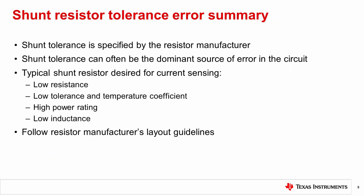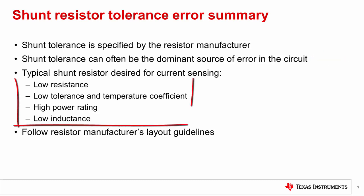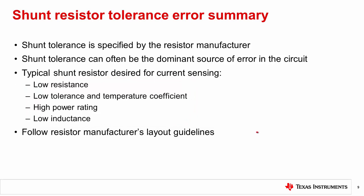Let's take a minute to summarize what we learned in this video. First, shunt tolerance is specified by the resistor manufacturer. Secondly, shunt tolerance can be the dominant source of error in the circuit. Thirdly, the typical shunt resistor desired for current sensing is one that is low resistance, low tolerance, high power rating, and low inductance. And last but not least, always follow the resistor manufacturer's layout guidelines.